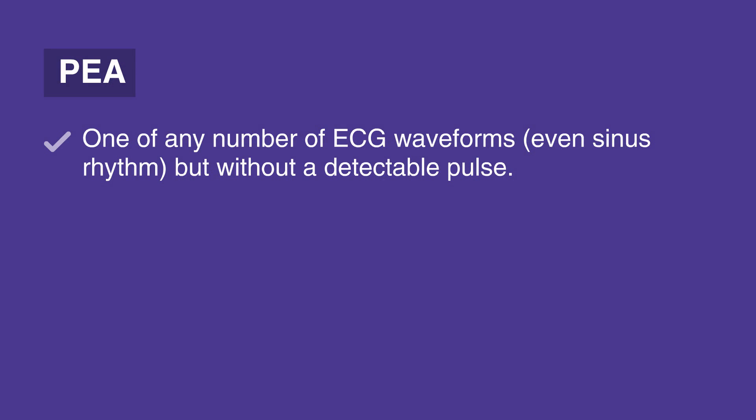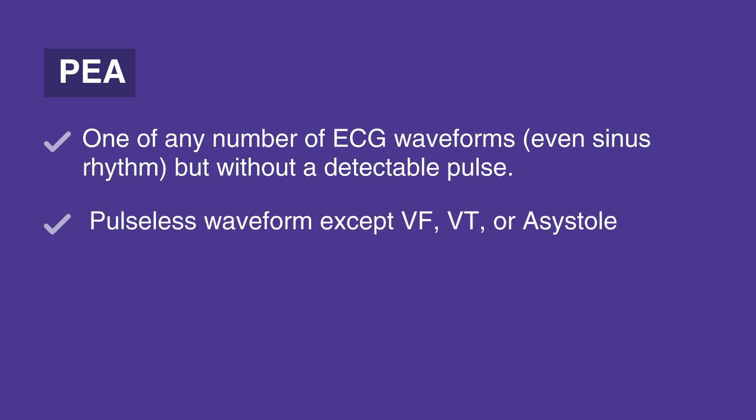PEA is one of any number of ECG waveforms, even sinus rhythm, but without a detectable pulse. PEA may include any pulseless waveform except VT, VF, or asystole.